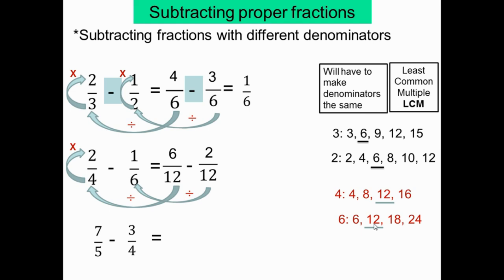Maintenant on a le même dénominateur. On soustrait les numérateurs: 6 moins 2 égal 4. On obtient 4 sur 12. Il faut simplifier: on divise par 4. 4 divisé par 4 égal 1, 12 divisé par 4 égal 3. La réponse est 1/3.